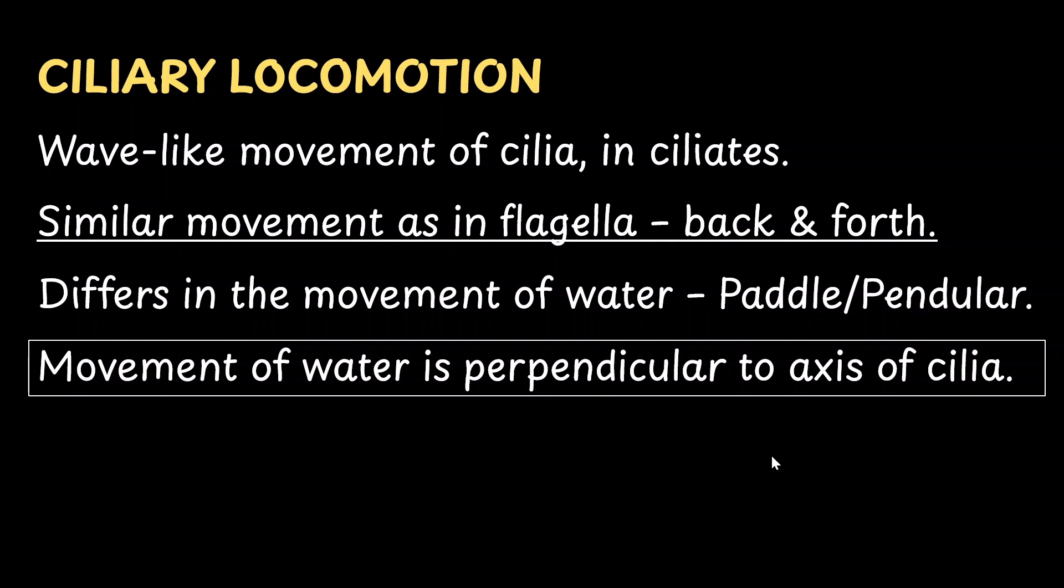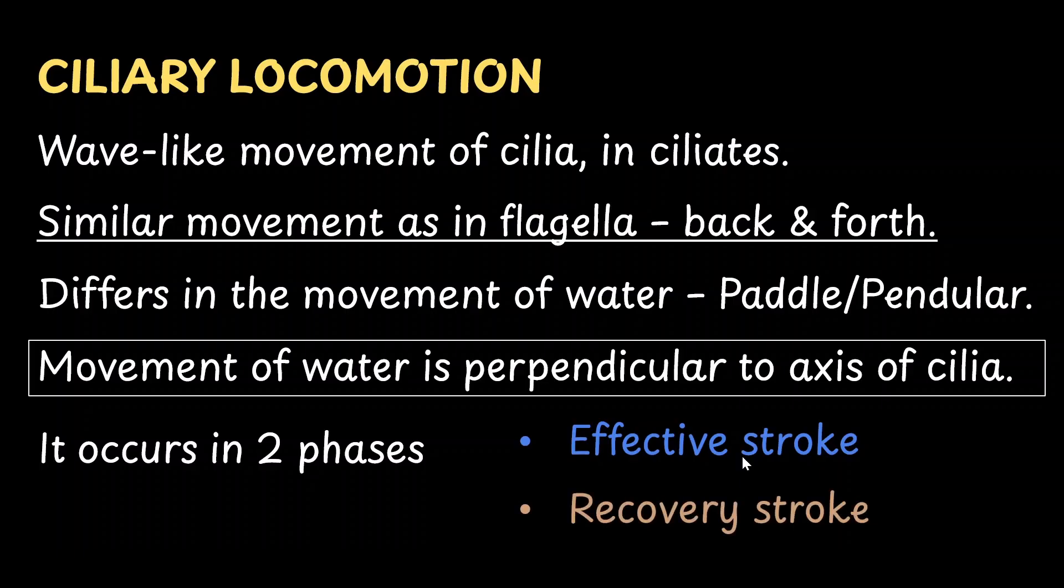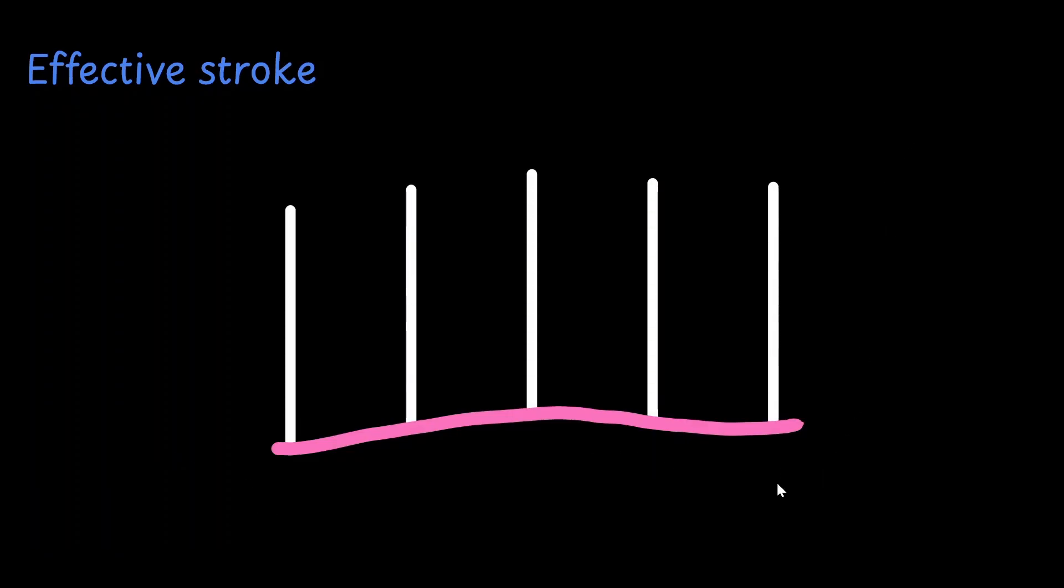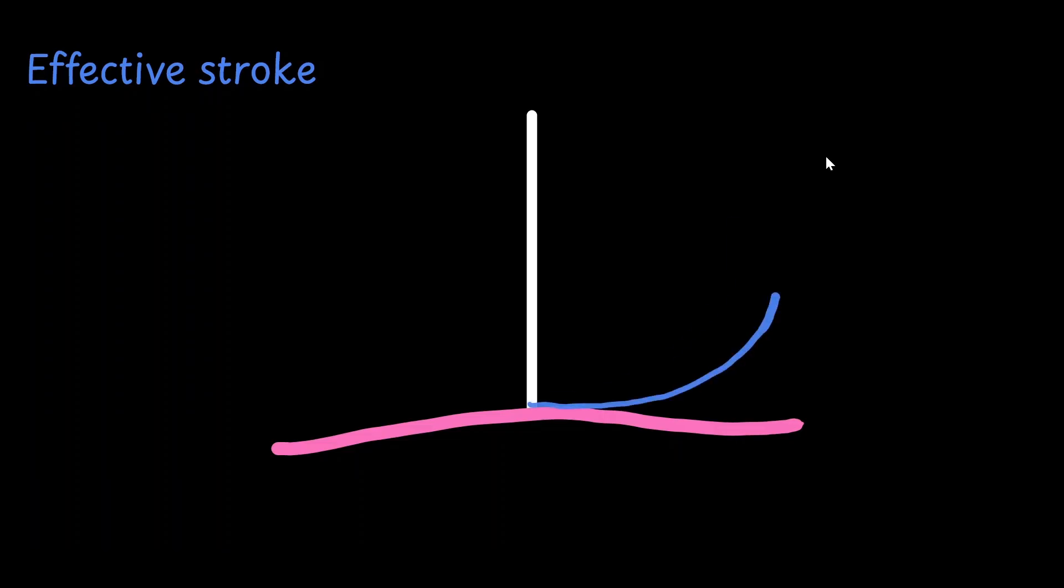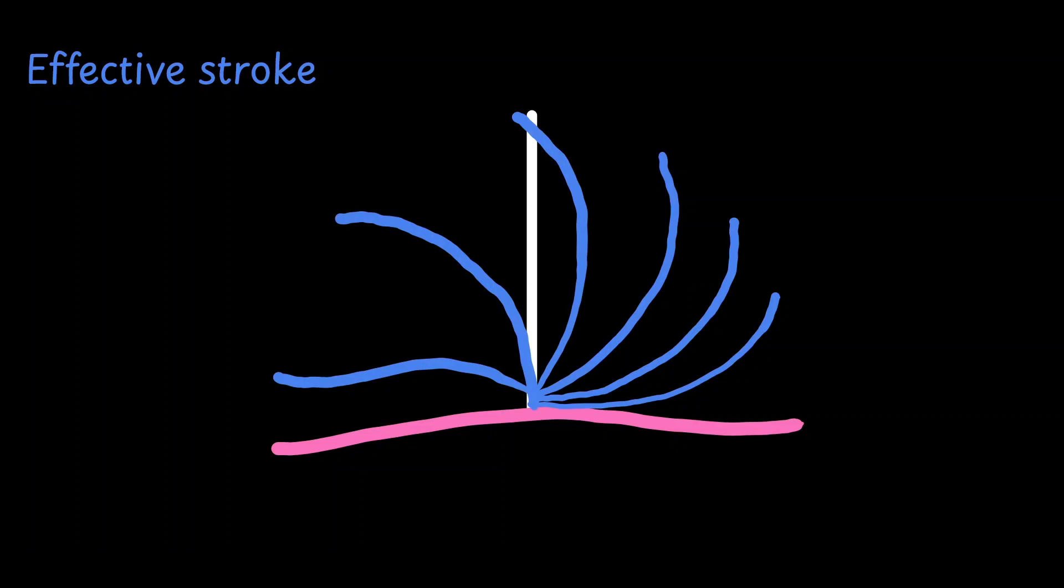Here too, it occurs in two phases or two strokes. One called the effective stroke and the other called the recovery stroke. First, let's look at effective stroke. This is the surface of the organism and you have multiple cilia on top like this. Let's focus on just one cilia for now. So what happens is that the cilia bends backward and it starts beating against the water. The direction of stroke is in this particular way.